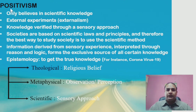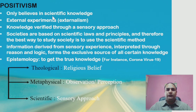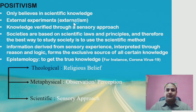Number one, this is POSITIVISM. Positivism only believes in scientific knowledge. Positivists rely on scientific knowledge, which is logical reasoning. These external experiments, or externalism — the things that you can observe, touch, and analyze — all those things are included in the positivism aspect.